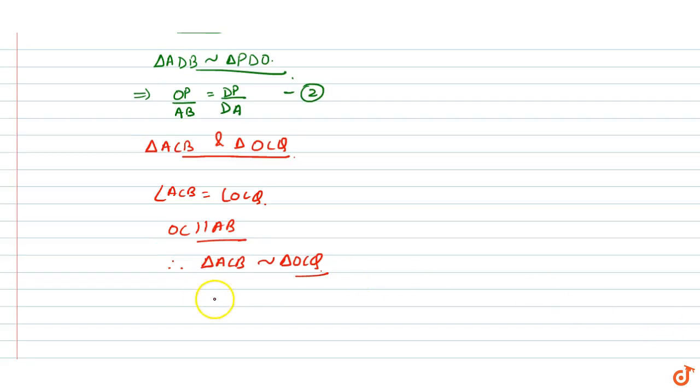The sides are proportional. That means OQ upon AB equals CQ upon CB. This is equation 3.